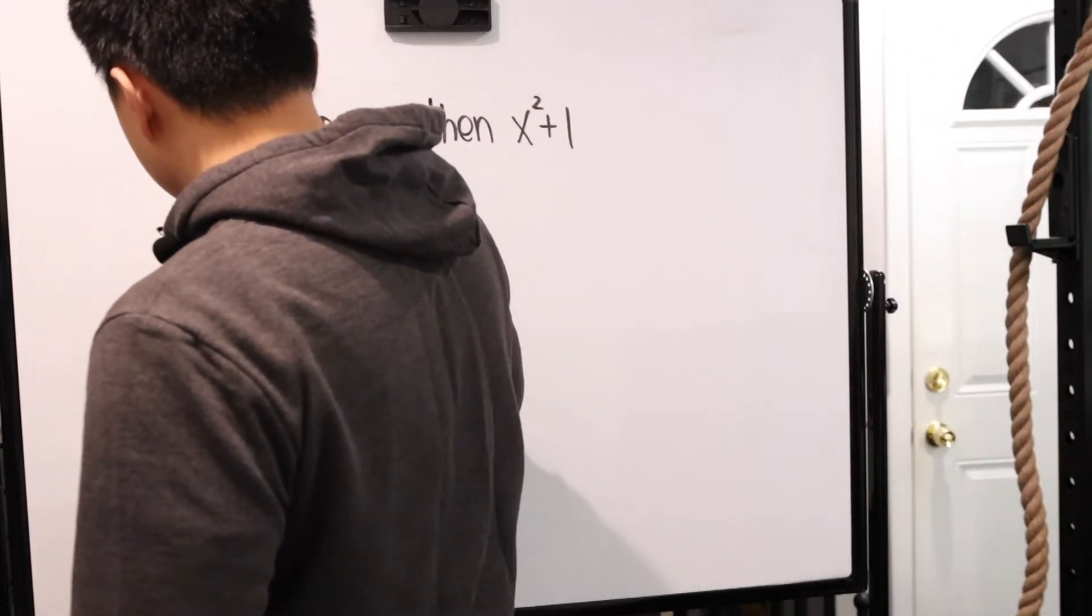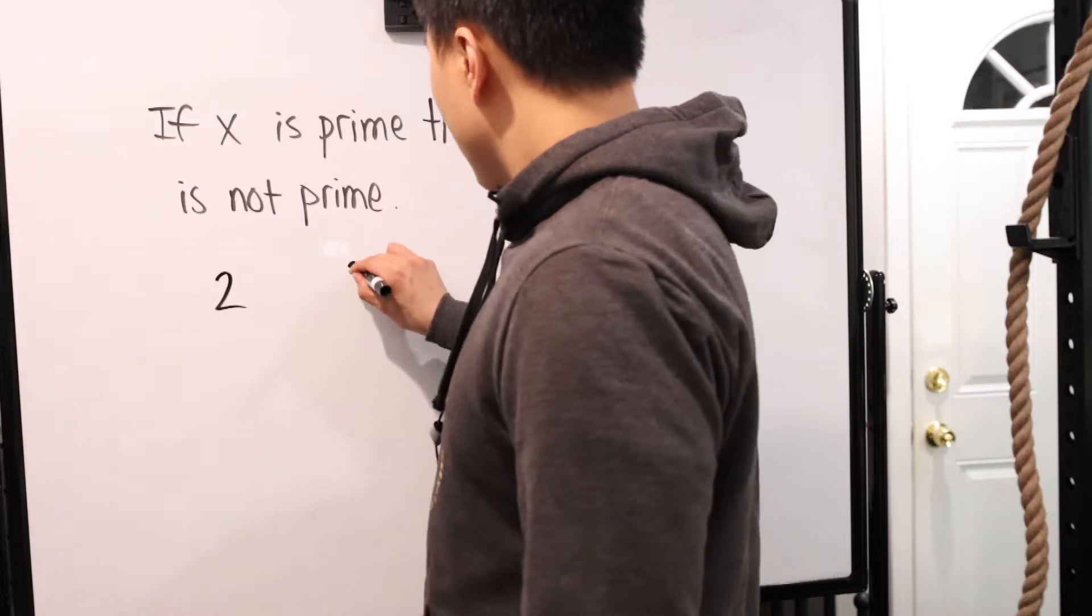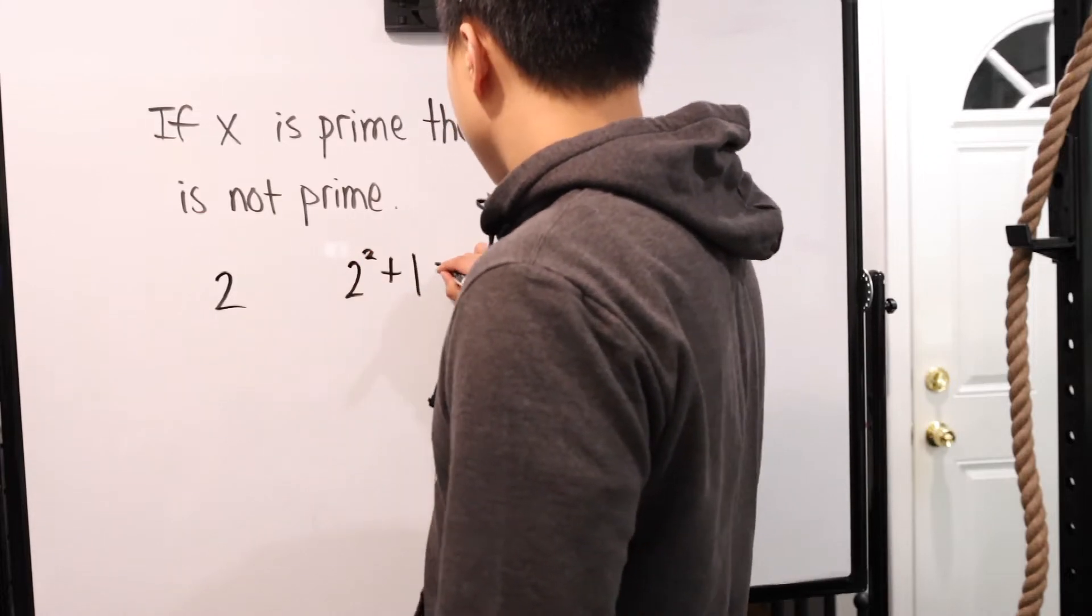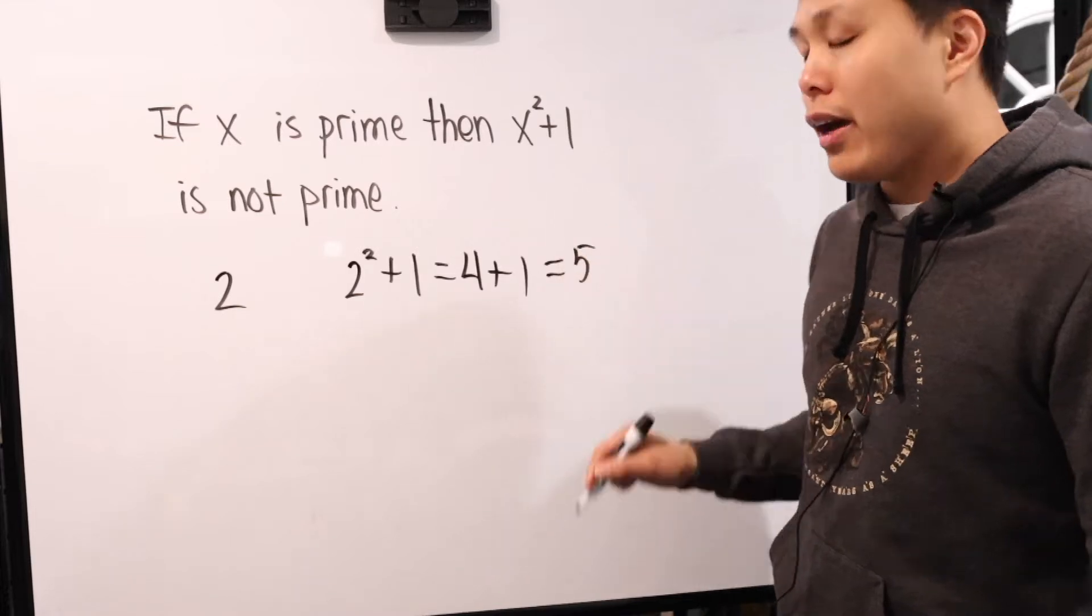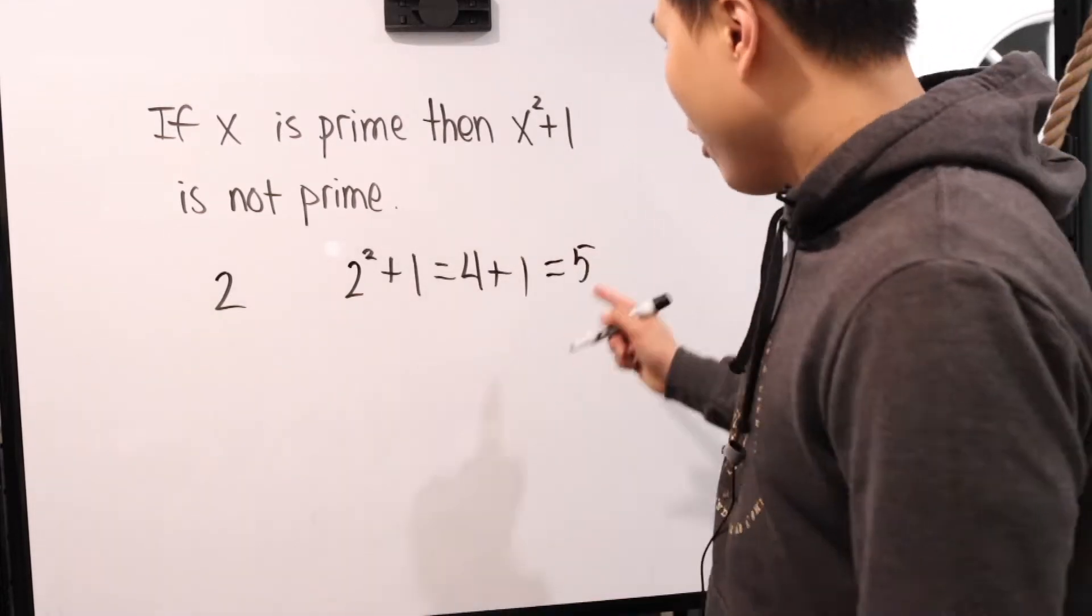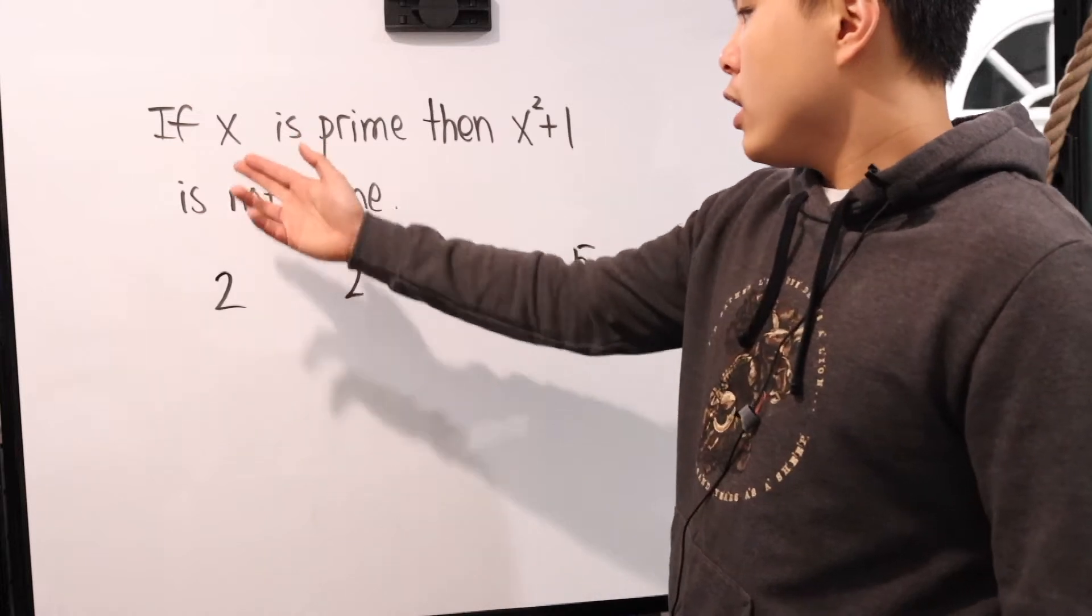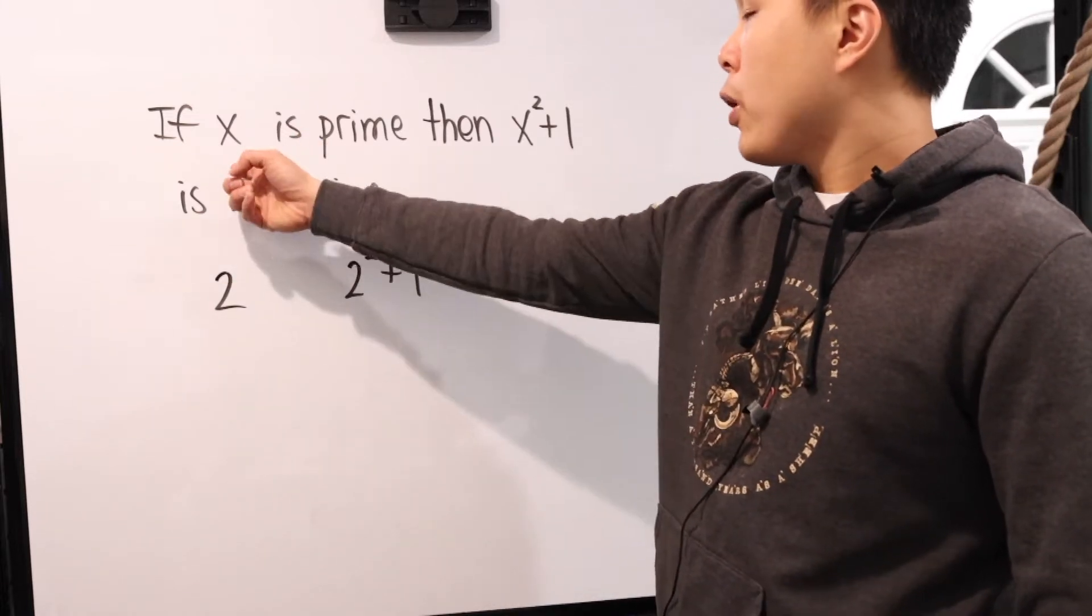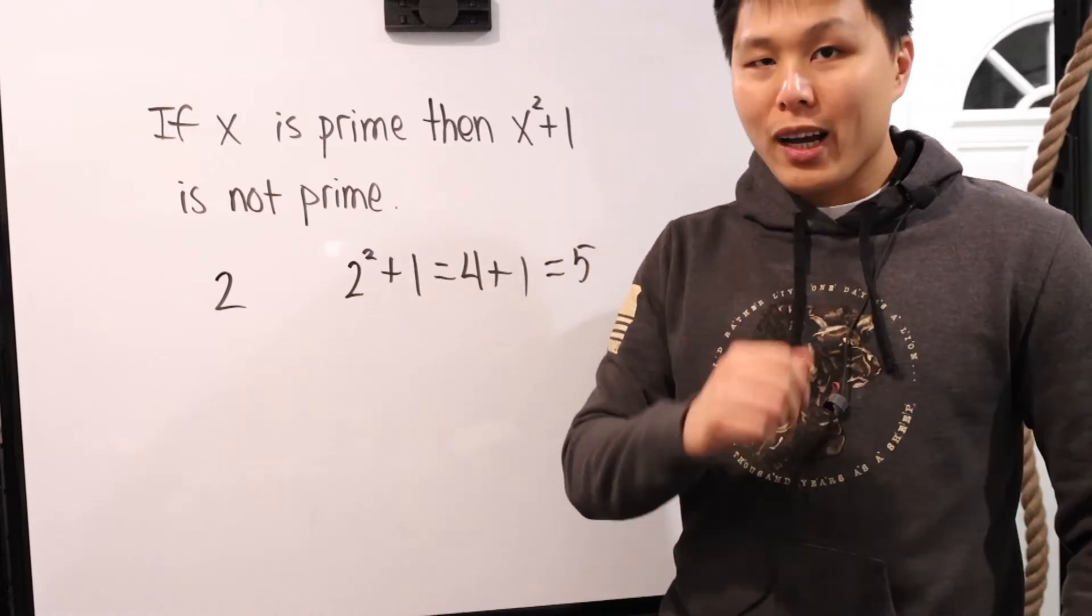If we choose the smallest prime, we know that two is a prime number. Well, two squared plus one, that is four plus one, which equals five. And we know, hopefully at this point, five is a prime number. So this statement itself is false because guess what? Even though we picked x as a prime number, we've shown that x squared plus one can also still be prime.